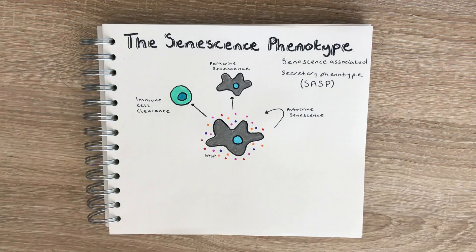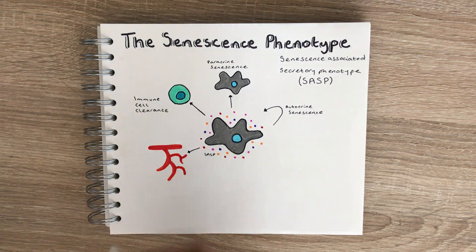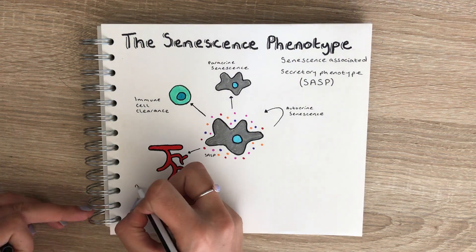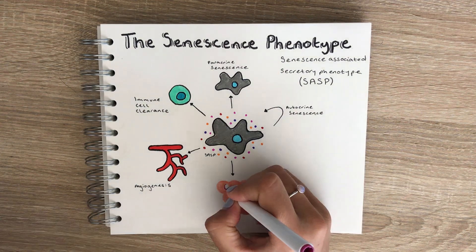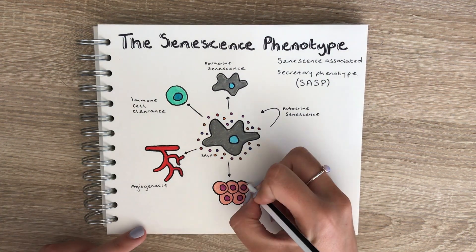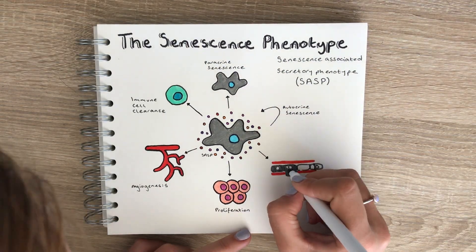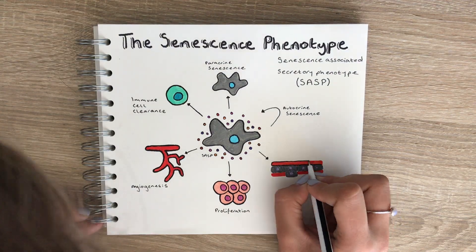The response of neighbouring cells really depends on the cell type and the context. As well as paracrine senescence, the SASP can also stimulate angiogenesis — the formation of new blood vessels. It can increase proliferation of nearby epithelial cells and therefore promote tumorigenesis, and it can also promote the invasion of neoplastic cells and disrupt normal tissue structure and function.